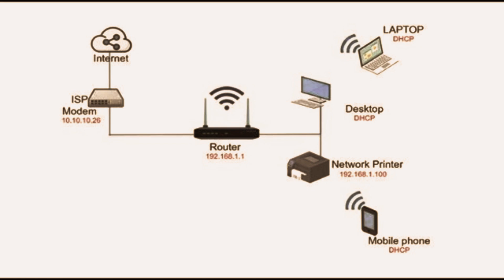Your desktop computer and network printer are connected to the router via Ethernet cables. This provides a stable and often faster connection for these devices, which can be useful for tasks that require high bandwidth or low latency. Your laptop and mobile devices connect to the internet via the router's Wi-Fi network, providing wireless connectivity and allowing you to move around without being physically tethered by cables.